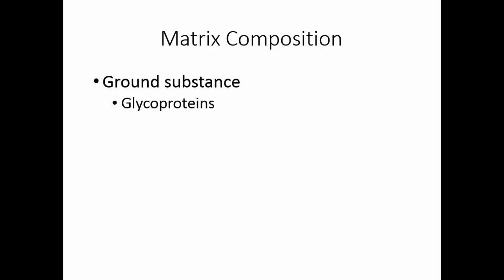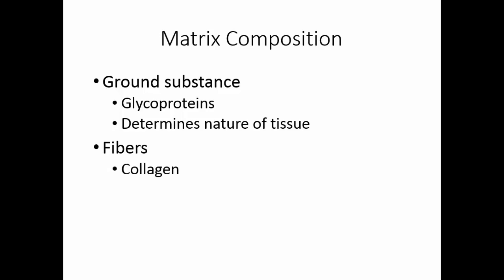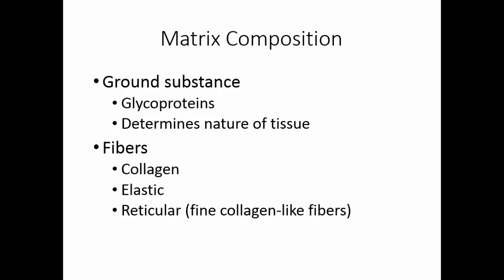The matrix has two major features in its composition. The ground substance is a group of glycoproteins — sugar proteins — that helps determine the nature of the tissue: whether it's spongy, gelatinous, or very firm. The other part of the matrix are the fibers. We have three fiber types: collagen, which are tough and flexible; elastic fibers, which are stretchy; and reticular fibers, which are very fine and delicate. Between the ground substance and the fibers, we get everything from bone, which is very hard, to blood, which is a liquid — all of those are connective tissues.